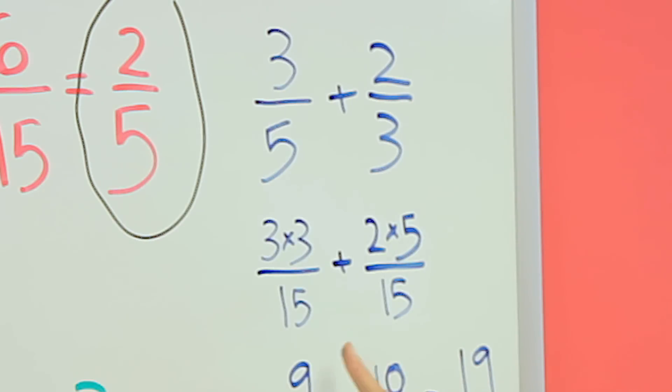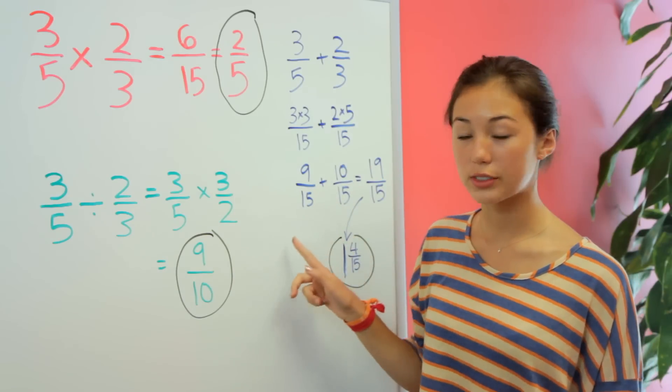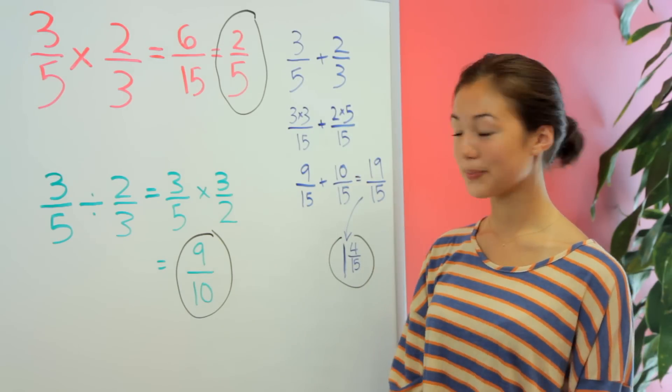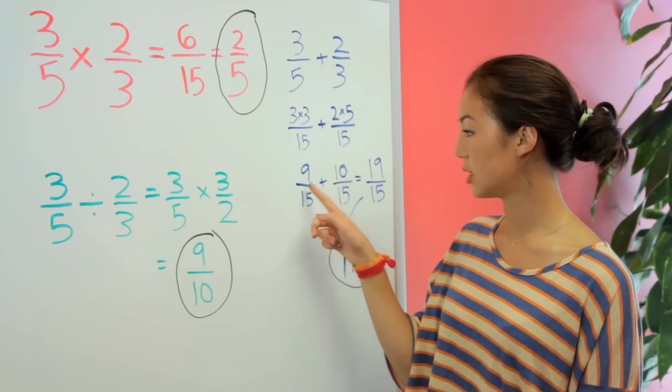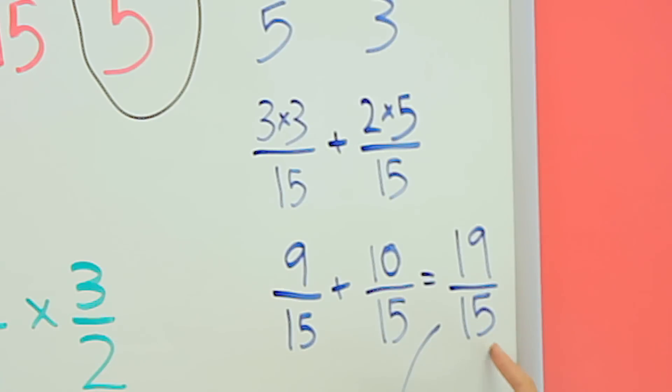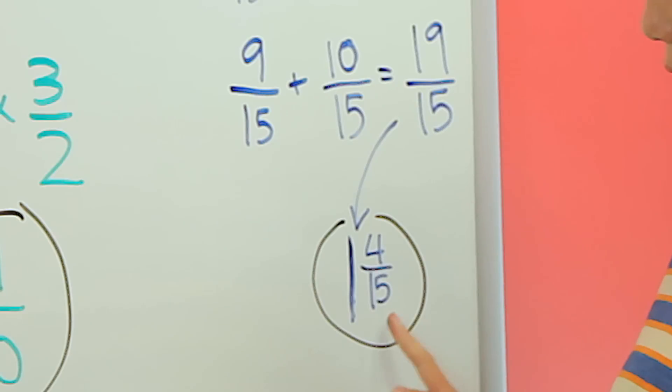So now we have our common base. Simplifying this, we have 9 over 15 plus 10 over 15. And then we can add these. We add just the numerators in addition, and we get 19 over 15, and maintain the base. And we simplify this to 1 and 4 fifteenths.